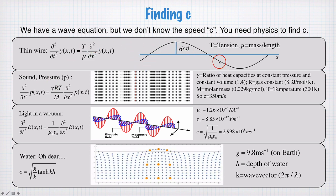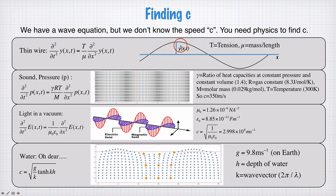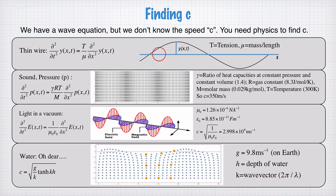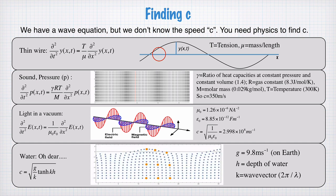And transverse waves propagating along a thin wire tend not to be dispersive. Although, if the wire becomes stiff, then you can start to see dispersion.